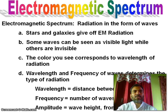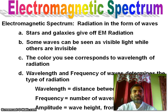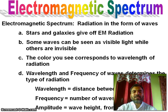I am going to start with the Electromagnetic Spectrum. Electromagnetic spectrum radiations travel in the form of waves. Stars and galaxies give off electromagnetic radiations. Some waves can be seen as visible light while others are invisible. The color you see corresponds to the wavelength of radiation. Wavelength and frequency of a wave determine the type of radiation. Wavelength is the distance between two waves; frequency is the number of waves per second.